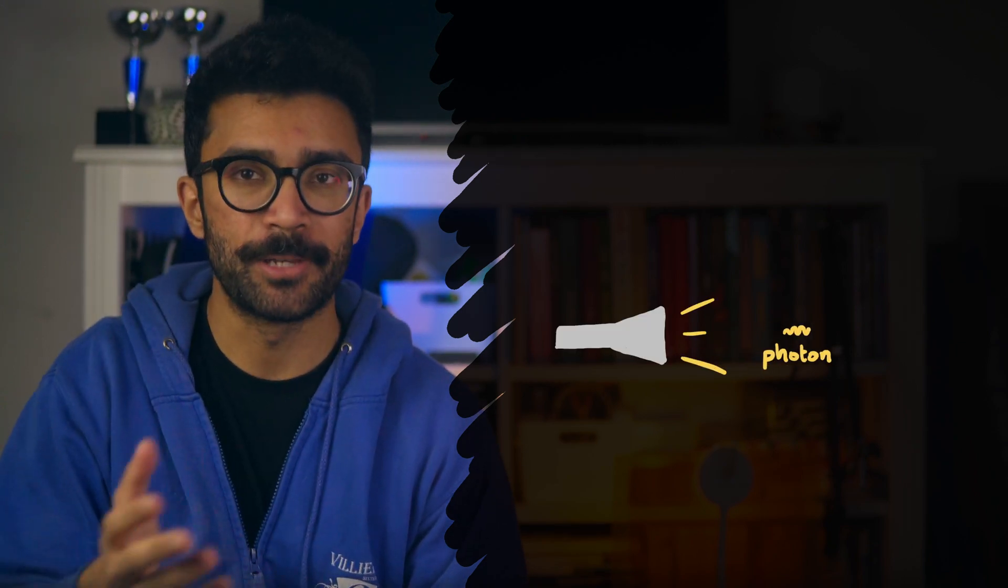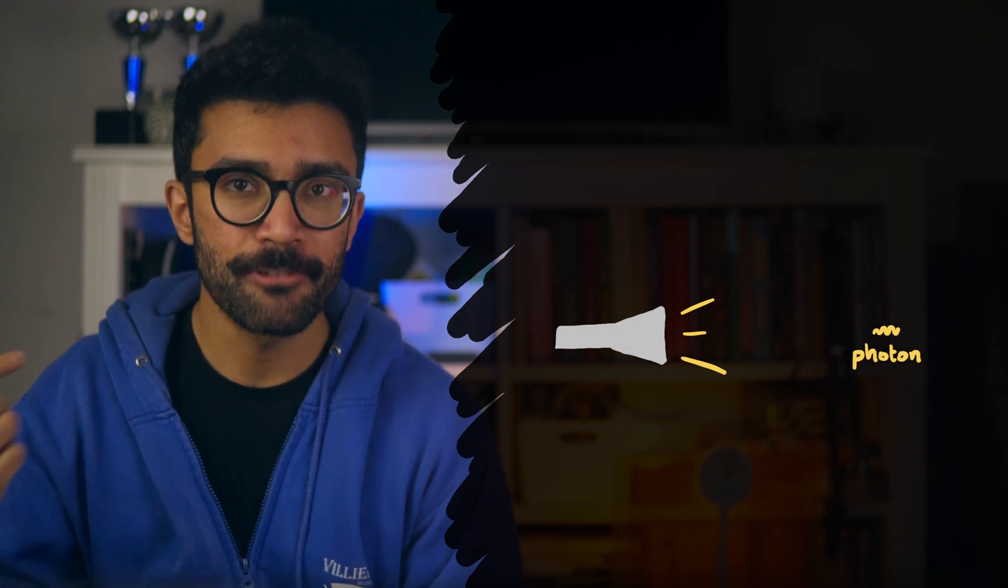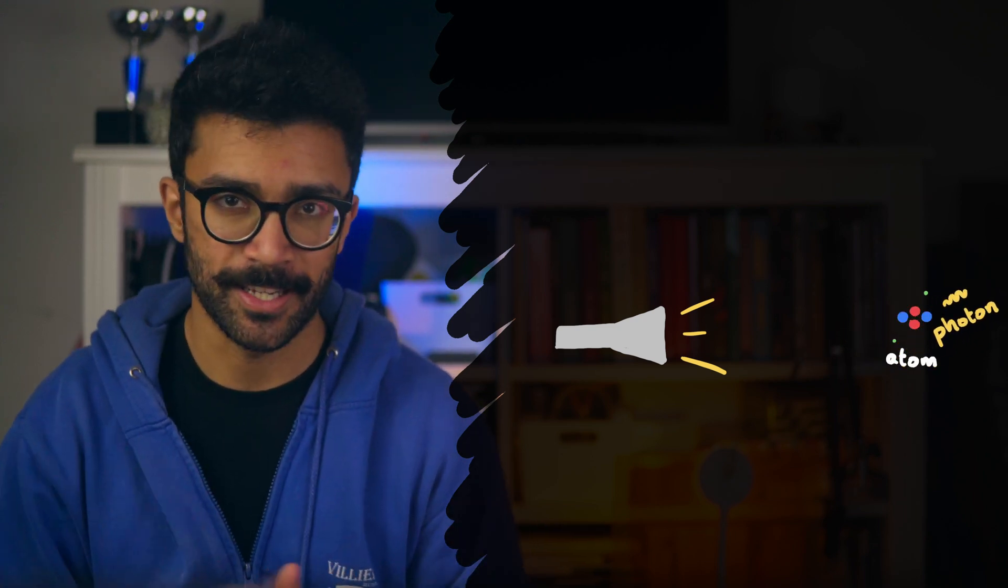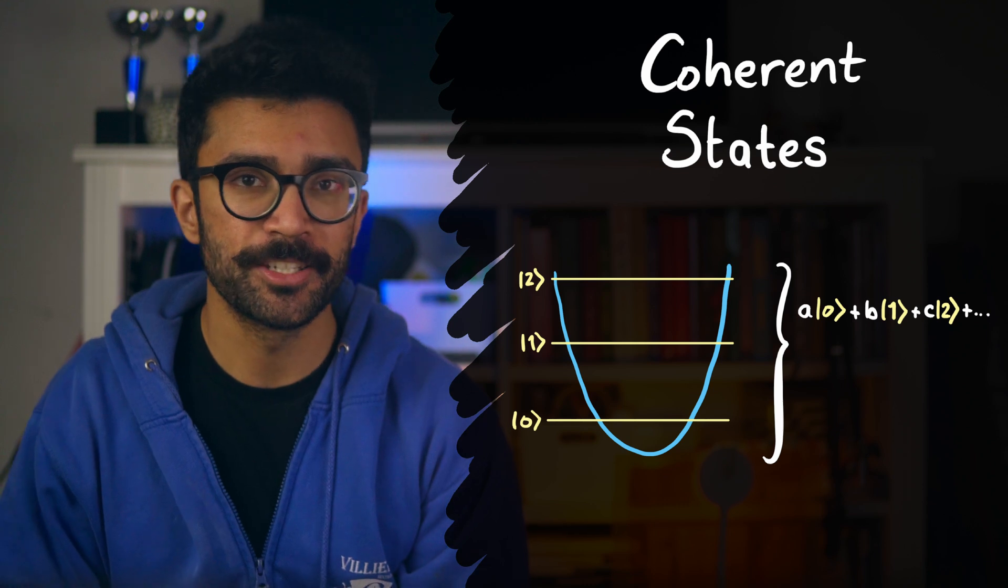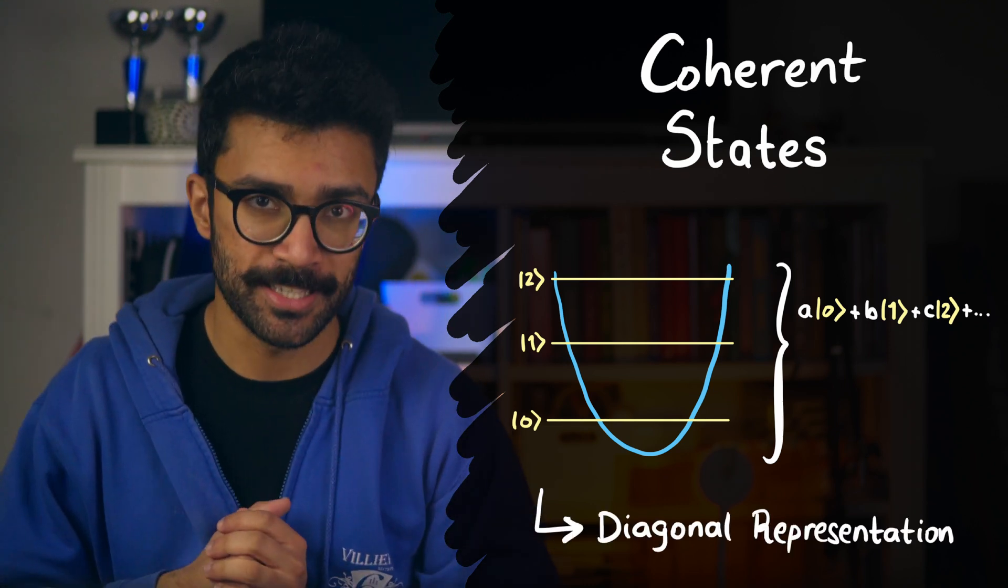George worked in a field of theoretical physics known as quantum optics. This field deals with how photons, the particles that make up light, interact with stuff around them—atoms, molecules, etc. And perhaps his most famous contribution is figuring out a way to use some ideas from a classical theory of electromagnetism, which had been around for over a hundred years at that point, to represent and understand the newly developing quantum mechanical idea of coherent states of light using something known as the diagonal representation.